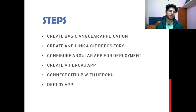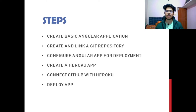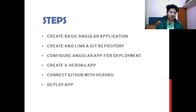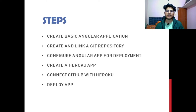For this particular process, there are steps. The first step is to create a basic Angular application. The second is to create a Git repository and link it with your Angular application. Third is to configure your Angular application for deployment. Fourth is to create a Heroku application. Fifth is to connect Heroku with GitHub. And the final one is to deploy your application.